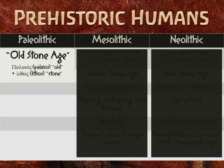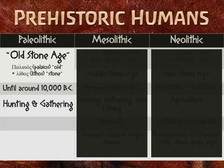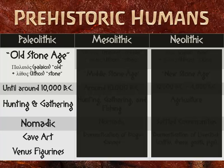The Paleolithic period comes from the Greek words 'palaios,' meaning old, and 'lithos,' meaning stone. It lasted until around 10,000 BC. Humans subsisted exclusively by hunting and gathering, and because of this they were nomadic — going from place to place following the food supply. Paleolithic people have given us a great deal of art in the form of cave art and Venus figurines.